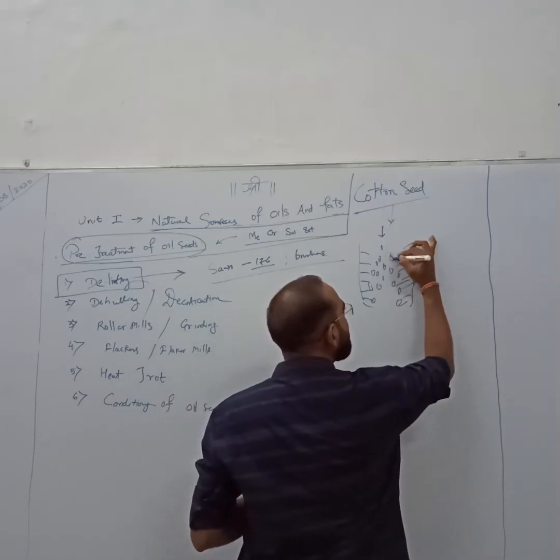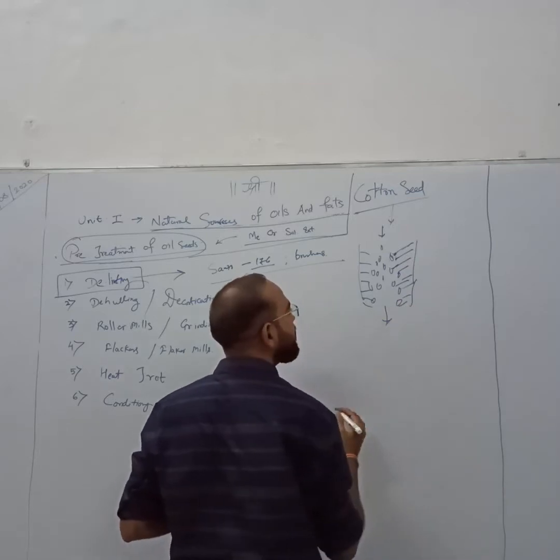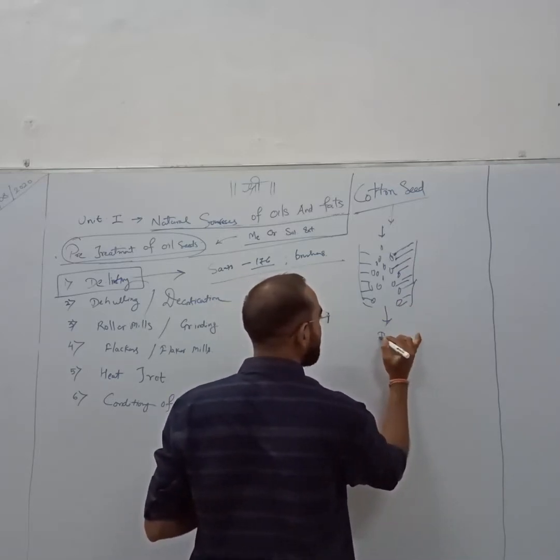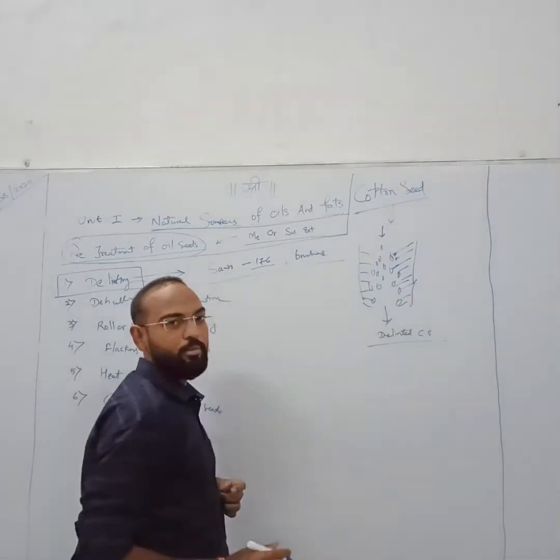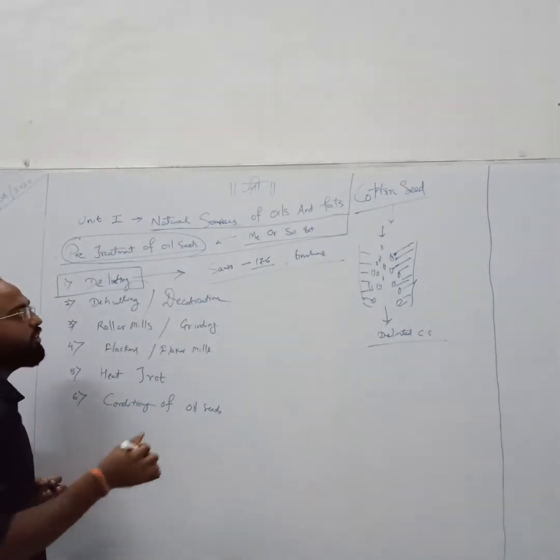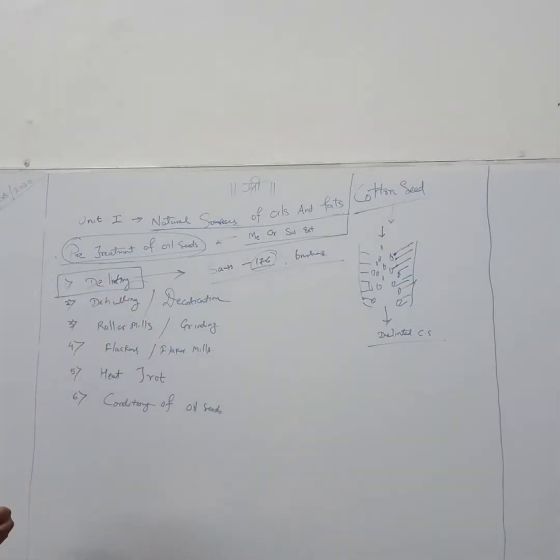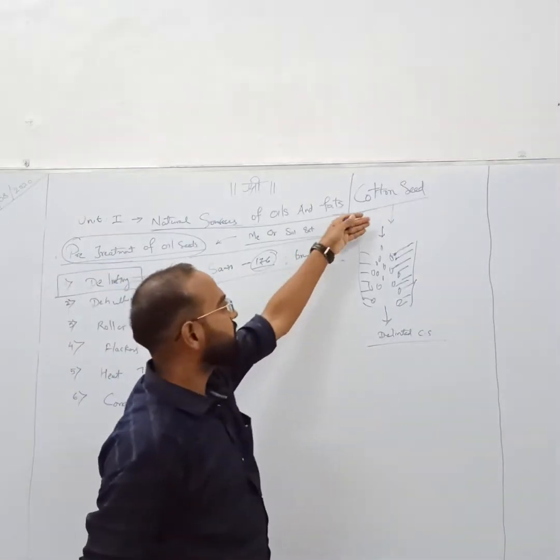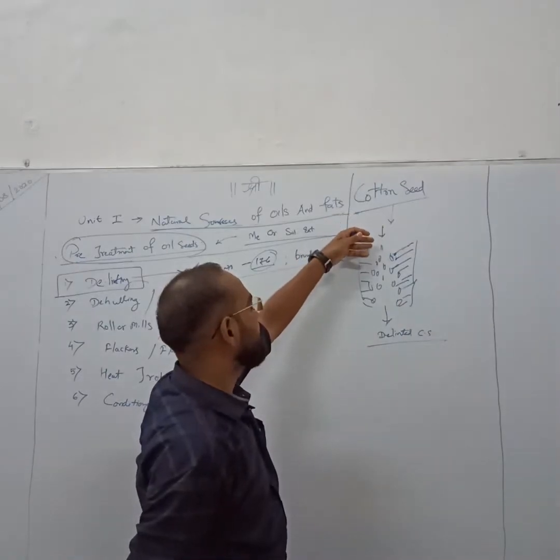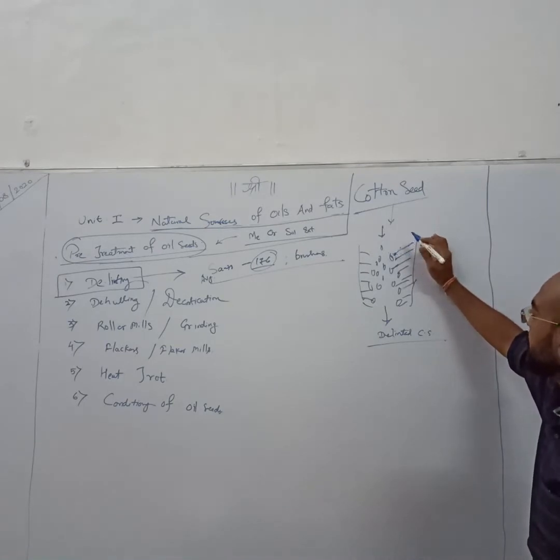The lint which is present on the outer sides of the shield get contacted with the saws and sticked to the saws. So from here we can get delinted outer sides, means there is no presence of fiber. All the small fibers are removed by these saws, around 176 in number. They may vary according to size and capacity of the machine, but on average there are 176 saws. Seeds come from the top and put into the machine.